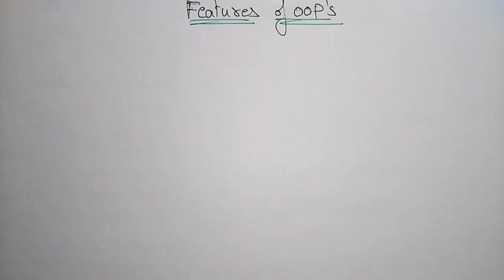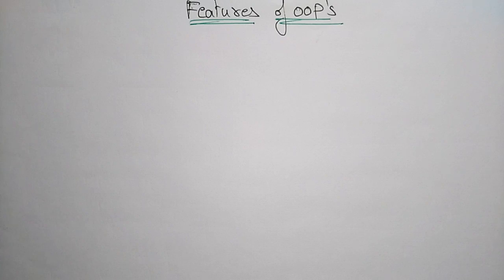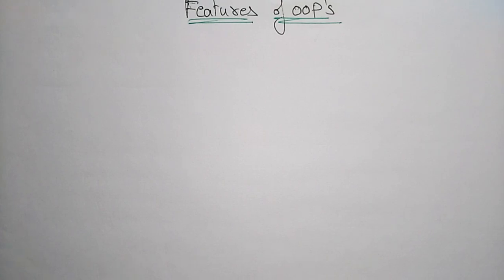Hi students, welcome back. Let us see the features of object-oriented programming. In the previous videos I explained one of the basic concepts — class and objects — which are the main building blocks of object-oriented programming. The basic concepts include class, objects, inheritance, polymorphism, and abstraction.